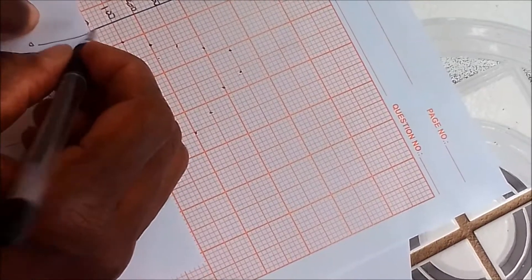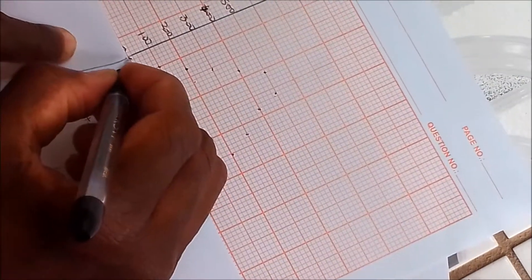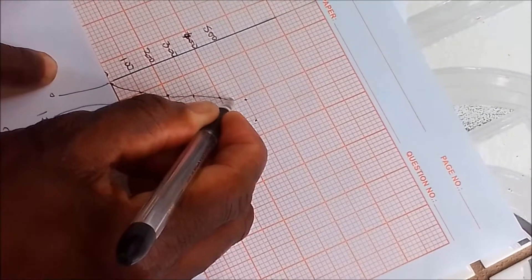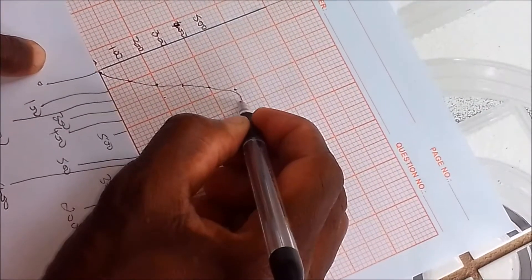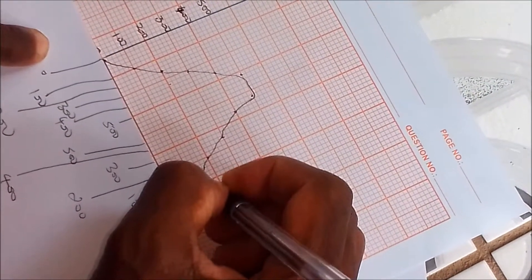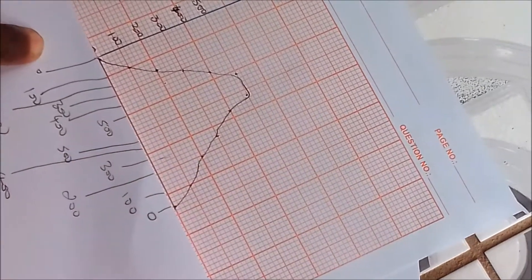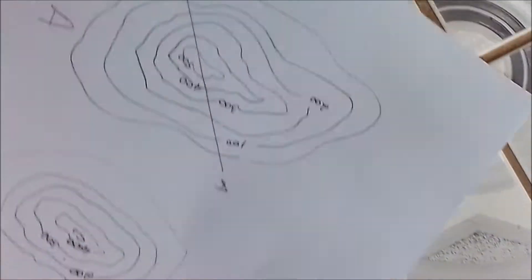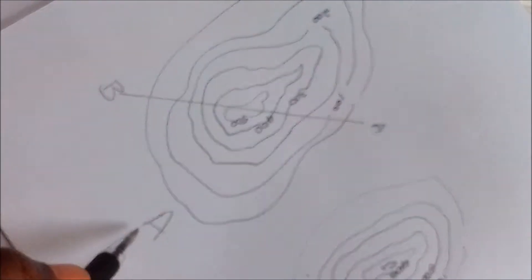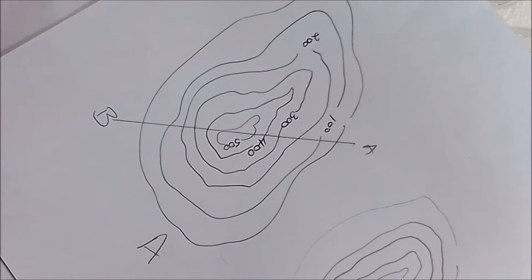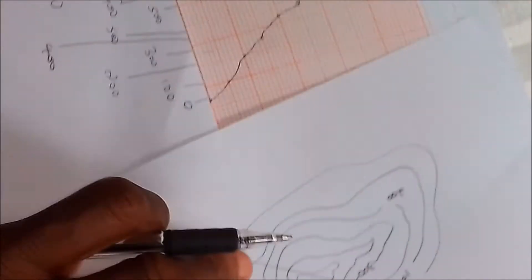I'm going to draw the lines now to complete the cross-section. Following the dots, this would be the cross-section — that is the completed cross-section for the first one, which is A.